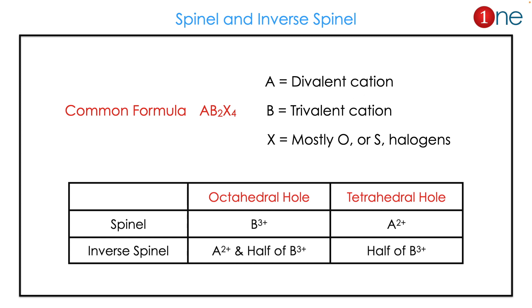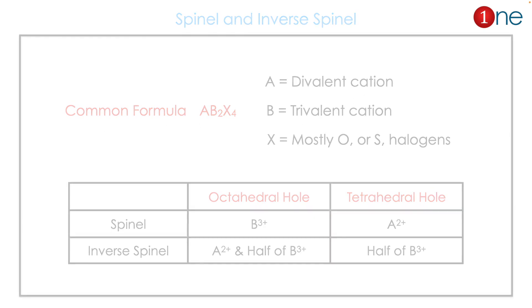In spinel, the higher charge cation occupies the octahedral hole and the low charge cation occupies the tetrahedral hole. In inverse spinel, it is the reverse — the only difference is half of the higher charge is in octahedral and half of the higher charge is also in the tetrahedral hole, so there is a sharing of higher charges.